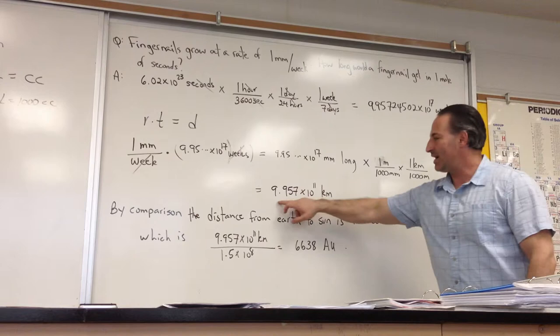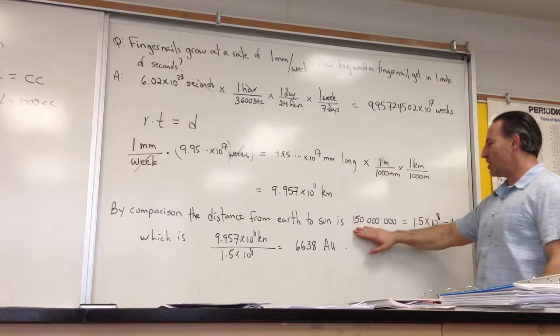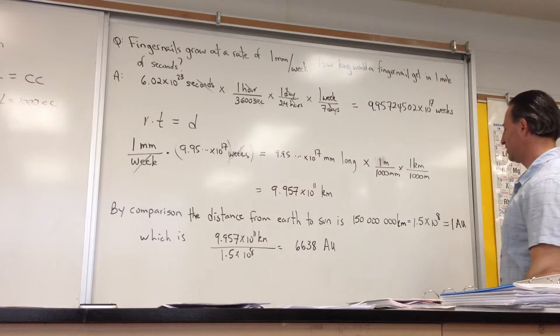Still hard to get your head around. Let's use something we're a bit more familiar with. The distance from the Earth to the Sun is 150 million kilometers, which equals 1.5 times 10 to the 8 kilometers, which is also known as one astronomical unit.